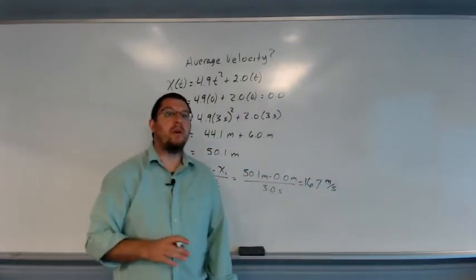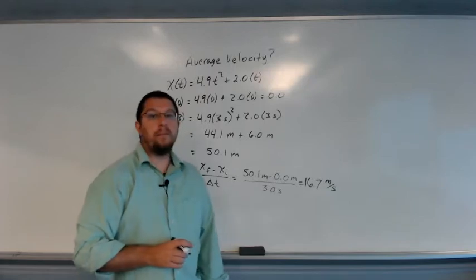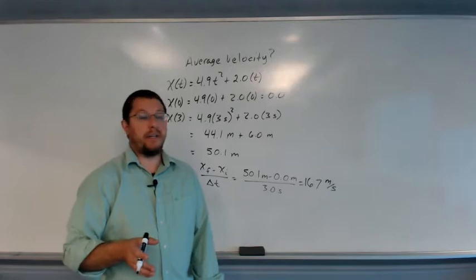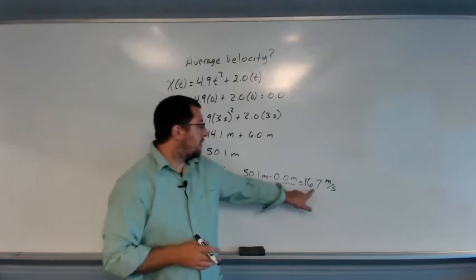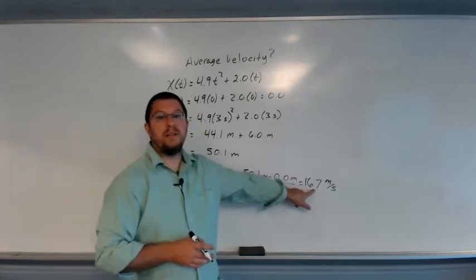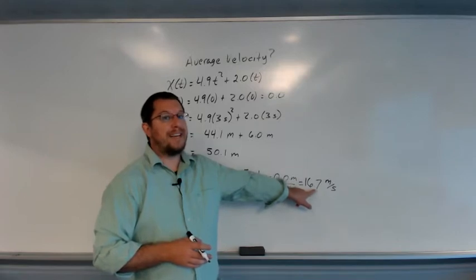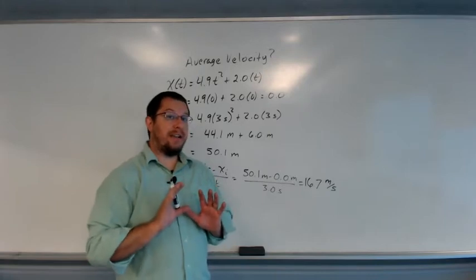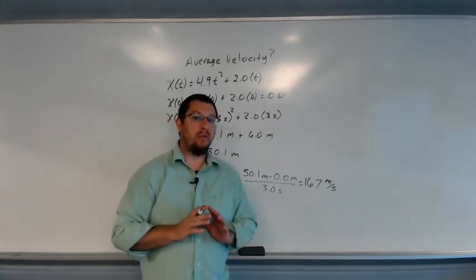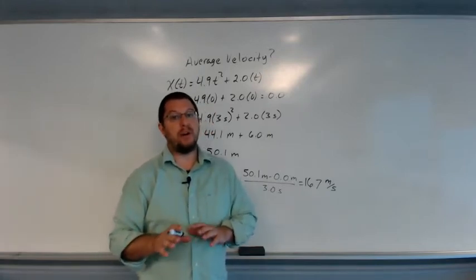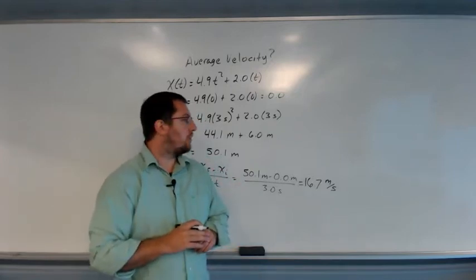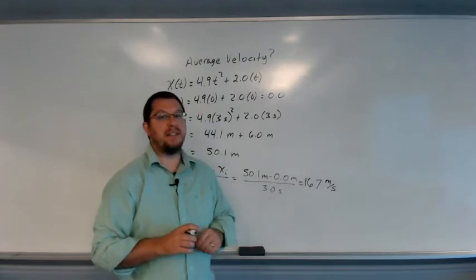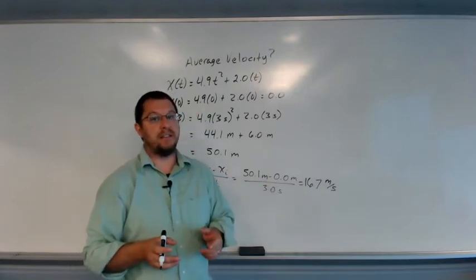Now, if you recall, the instantaneous velocity was in the 30s, and you might be tempted to look and say, 16.7 might be almost exactly half of that value. It's not exactly, and we will see why in the future. I'm going to leave that for you to see if you can figure out under what conditions the average velocity is exactly half of a final instantaneous velocity.